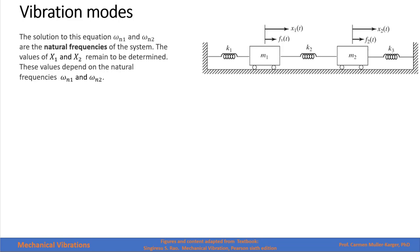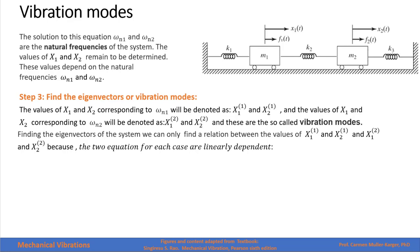Now that we have the natural frequencies, the amplitude values x1 and x2 remain to be determined. Those values depend on the natural frequencies omega_n1 or omega_n2. This leads to the third step: finding the eigenvectors or vibration modes of the system. The amplitudes corresponding to omega_n1 are denoted x1 superscript 1 and x2 superscript 1, and those corresponding to omega_n2 are x1 superscript 2 and x2 superscript 2. These are the so-called vibration modes.